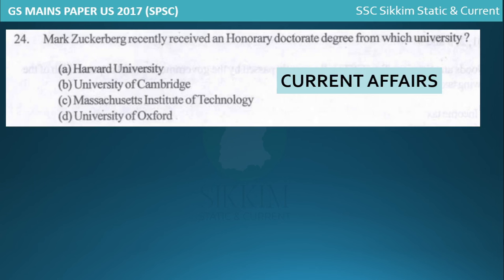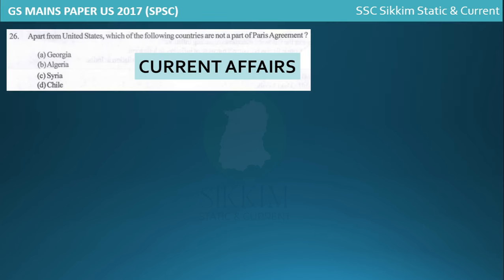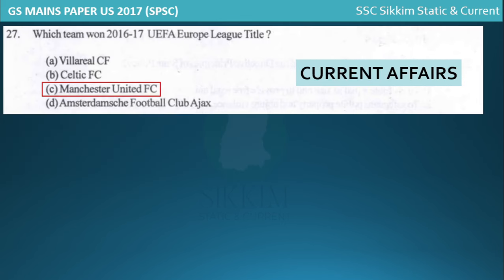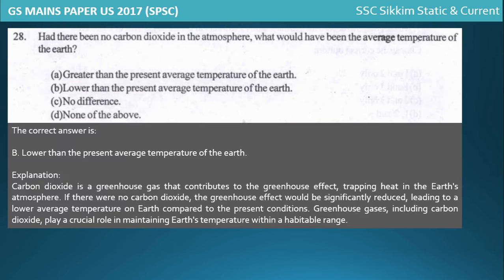Some current affairs questions follow, including one about which ministry banned cattle slaughter across India, and which countries apart from the US are not part of the Paris Agreement. Regarding carbon dioxide in the atmosphere - if there were no CO2, the average temperature of the earth would be lower than the present temperature. Explanations for all answers will be available in the PDF.